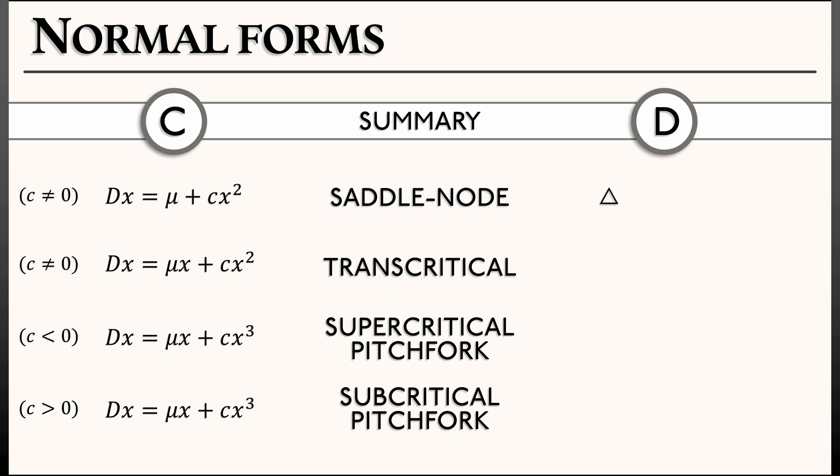So for a saddle node, the normal form is delta x equals mu plus c x squared. For a transcritical, it's delta x equals mu x plus c x squared. For pitchforks, it's delta x equals mu x plus c x cubed, and these will split into super and subcritical based on whether c is negative or positive, respectively.